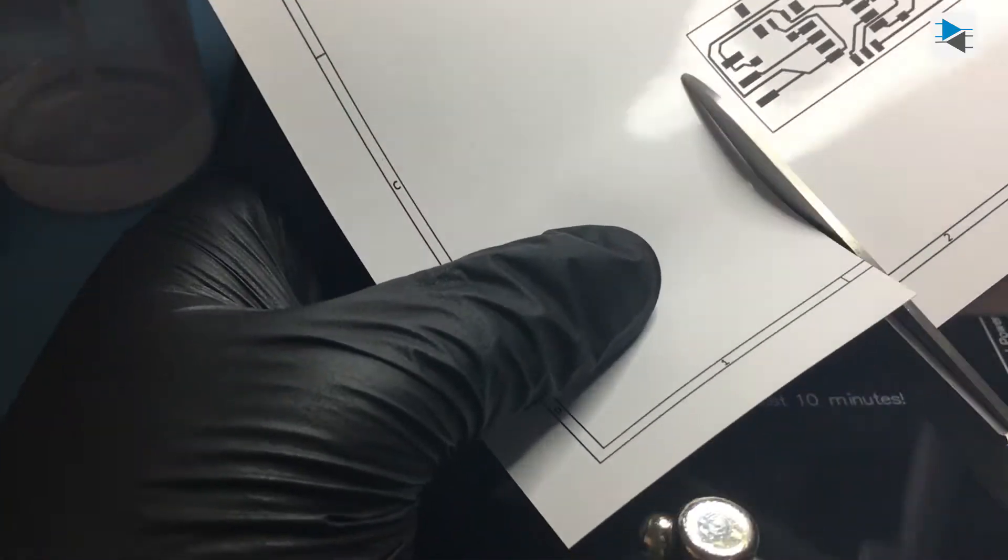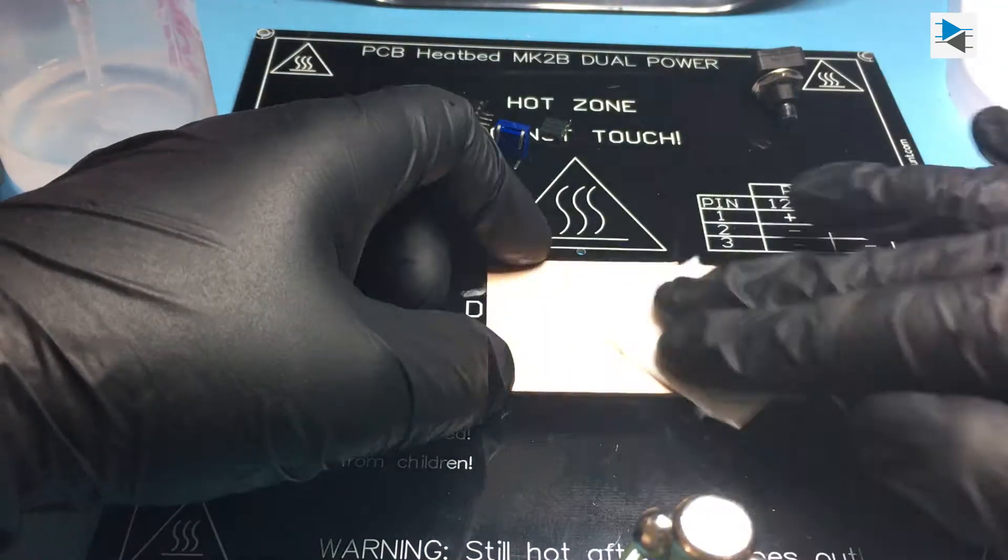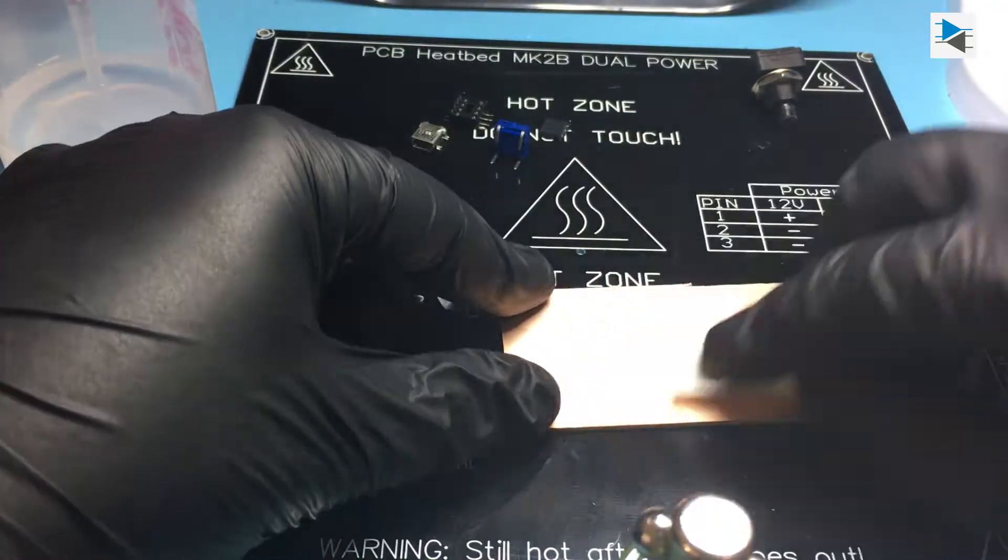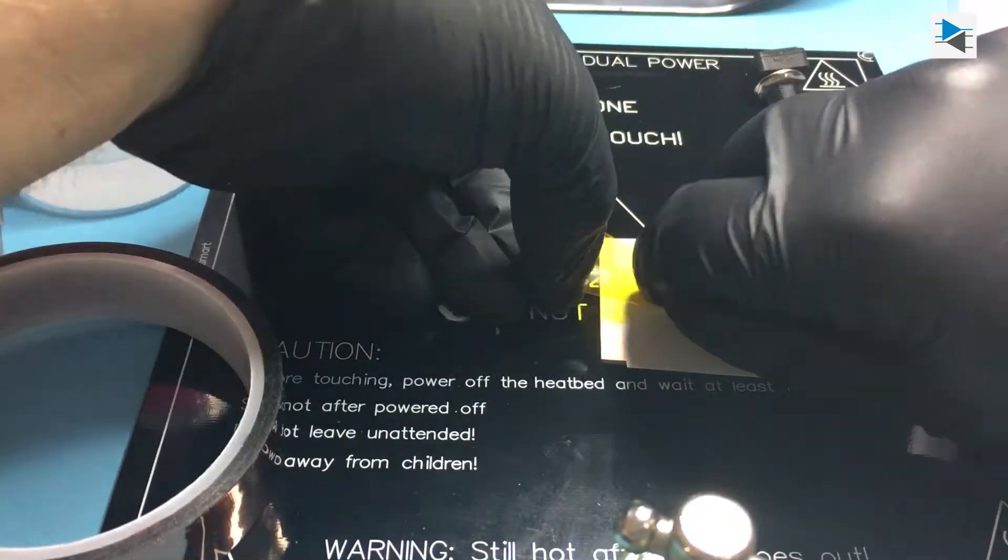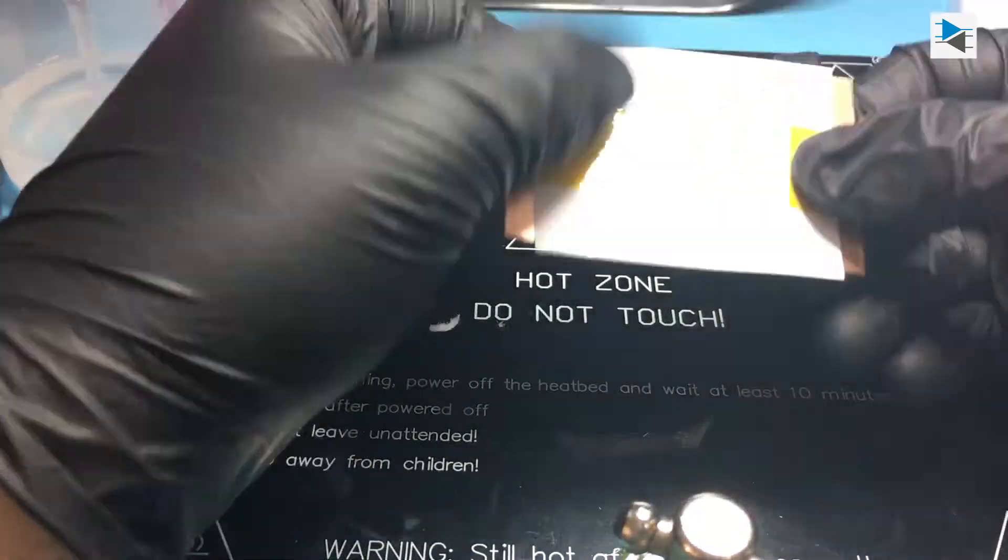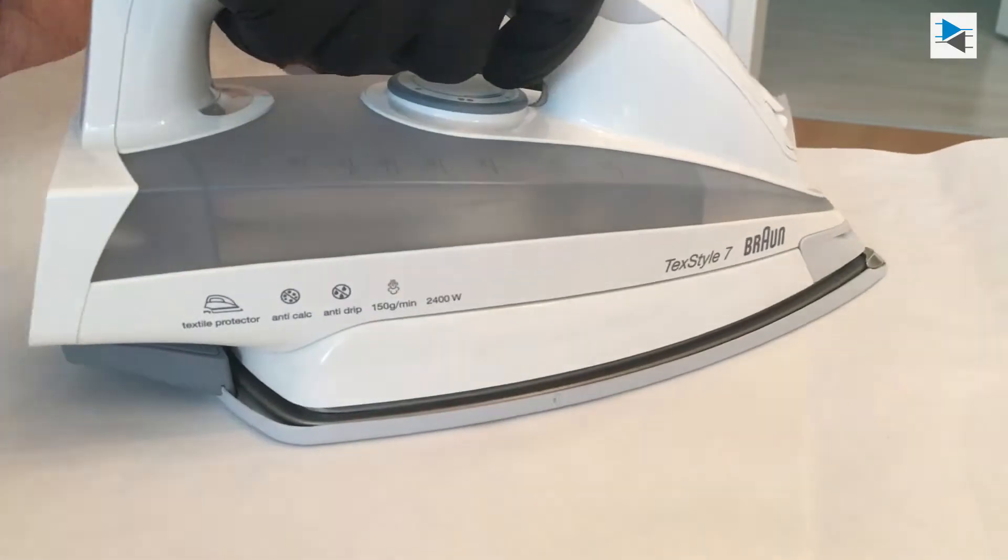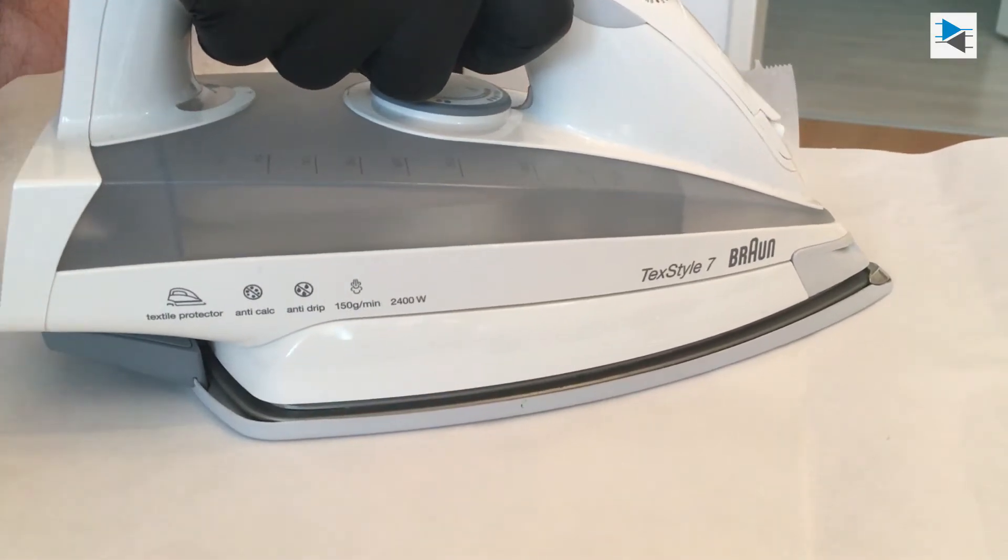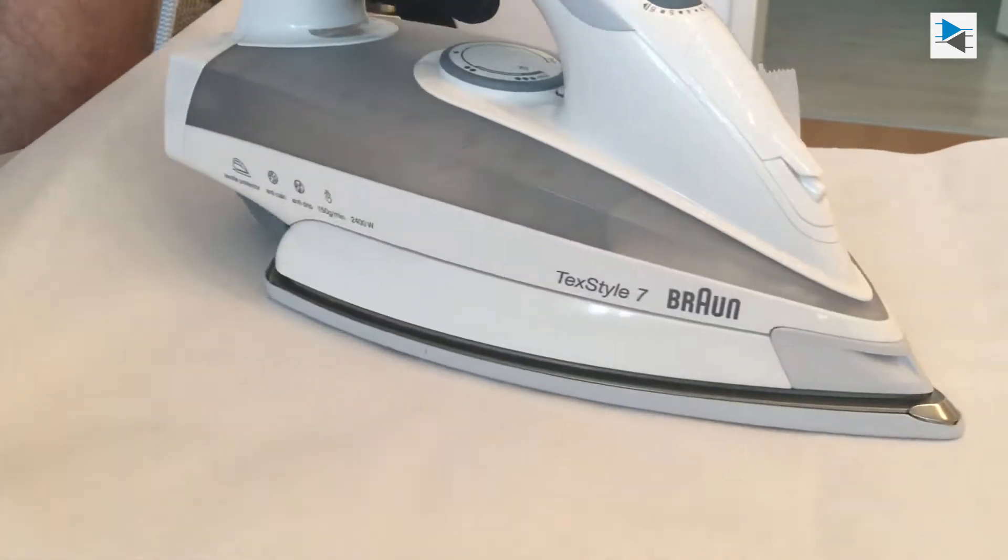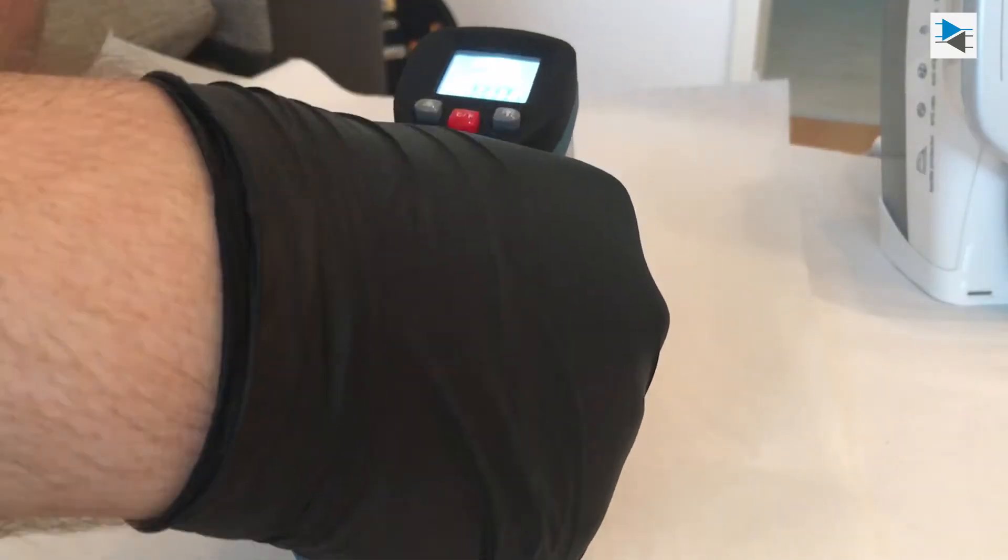For the fabrication of the prototype PCB, the toner transfer method was used where the design is printed on glossy printing paper using a laser printer and is then transferred to a copper board using a common household electric iron. The heat from the iron remelts the toner particles and they adhere to the copper board acting as an etch resist.